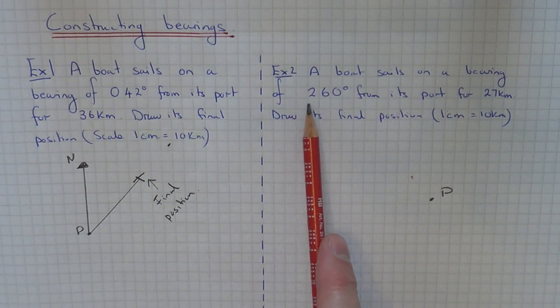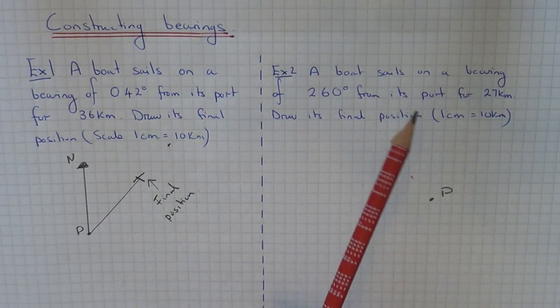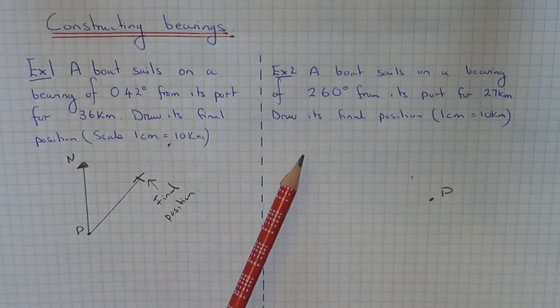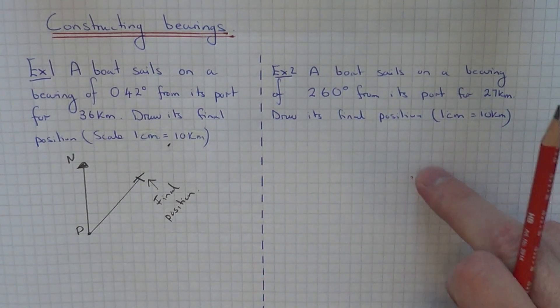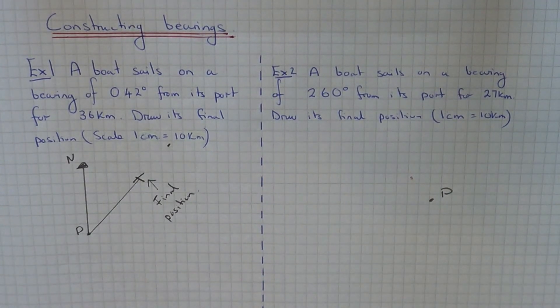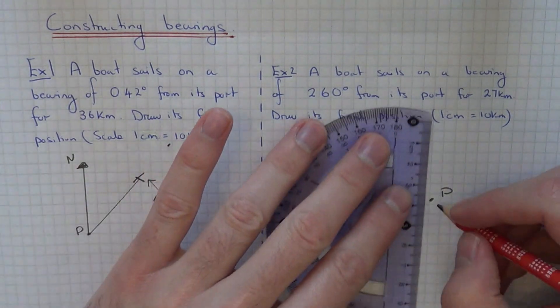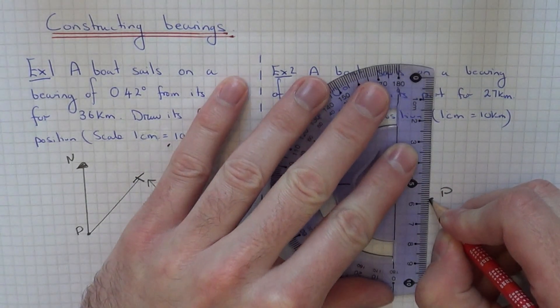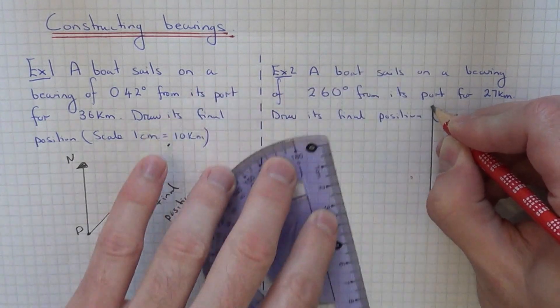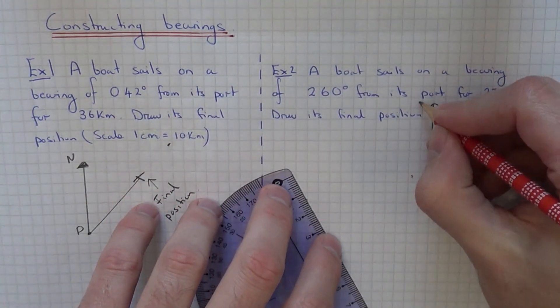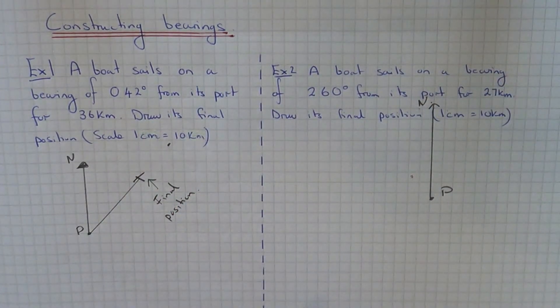The boat sails on a bearing of 260 degrees from its port, this time for 27km. Draw its final position. Again, draw a north line from your port. Now we've got to measure an angle of 260 degrees.